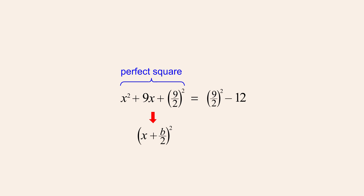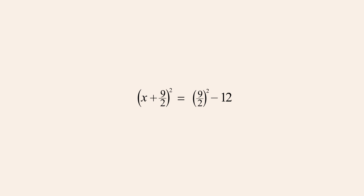And since in this example b is 9, this perfect square quadratic can be written as x plus 9-halves quantity squared. We can then simplify the right side of the equation by squaring the fraction 9-halves — squaring its numerator and denominator. 81 fourths and 12 can then be combined by first writing 12 as 48 fourths, and then subtracting 48 fourths from 81 fourths, giving us 33 fourths. We then solve for x by taking the square roots of both sides of the equation.